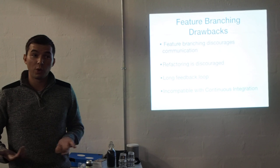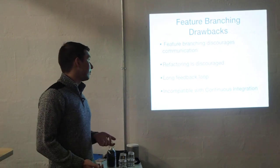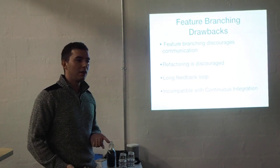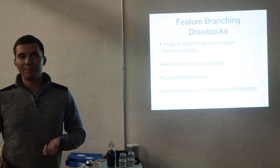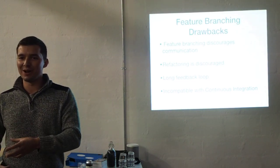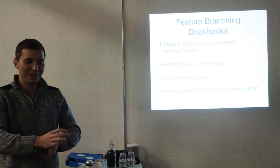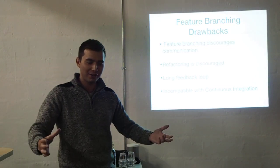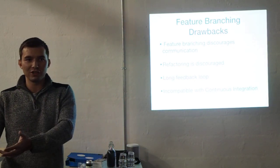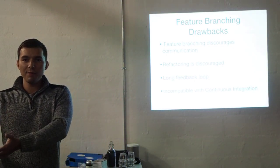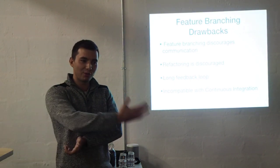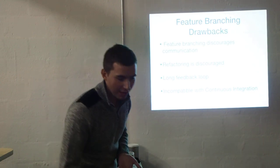I believe that feature branching has quite significant drawbacks. Firstly, feature branching actually discourages communication between developers. Feature branching basically prioritizes the idea that developers should always be working in sandboxed environments — I work in my branch that touches none of your code, you work in your branch that touches none of my code. Multiply that by five and we're all working in completely different sandboxes. If I make changes within my feature branch, I'm not necessarily having to communicate that at all. No one's seeing the changes I'm making.